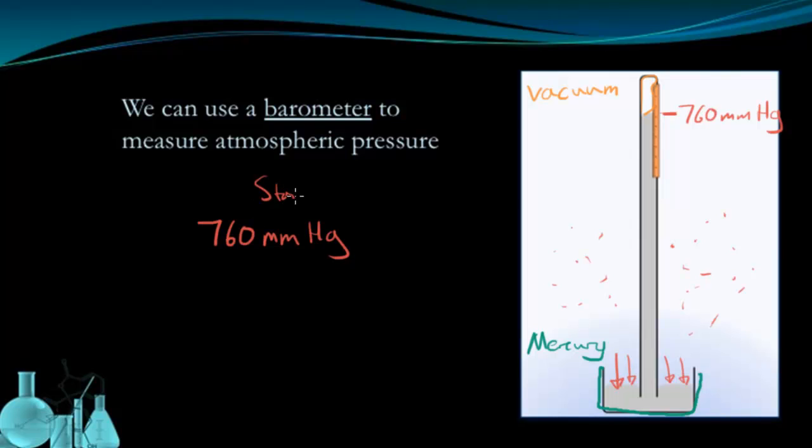This is our standard pressure. We also have other units that can be used to represent standard pressure that are equivalent to millimeters of mercury. The equivalent standard pressure in other units are 760 torr. That's another unit that essentially means millimeters of mercury.